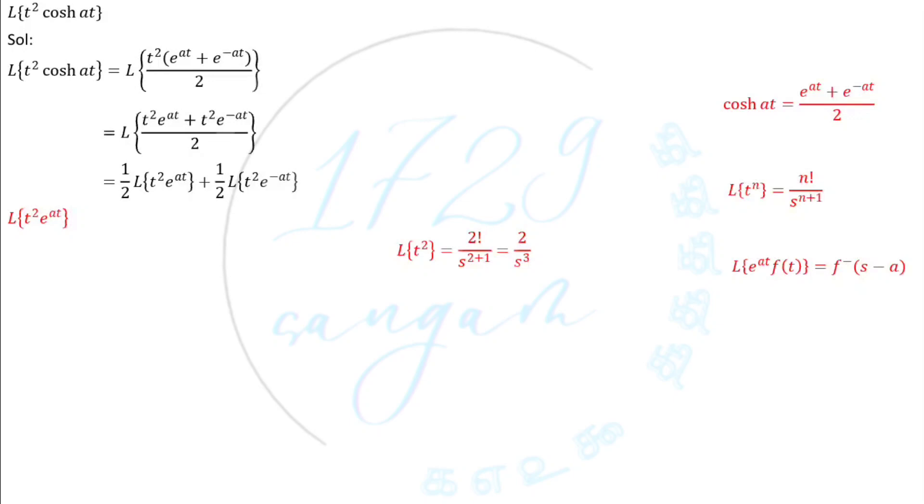Here same, what is the Laplace transformation of t squared? It's just 2 by s cube. Now it has e power at, so we put minus a instead of s. We use s minus a. Same s plus a because here e power minus at.